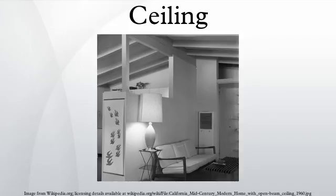A cove ceiling uses a curved plaster transition between wall and ceiling. It is named for cove molding, a molding with a concave curve. A stretched ceiling uses a number of individual panels using materials such as PVC, fixed to a per-metre rail.